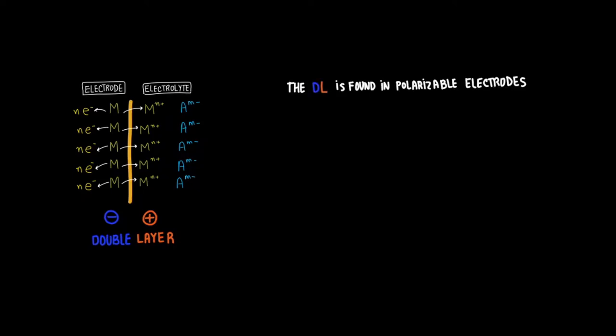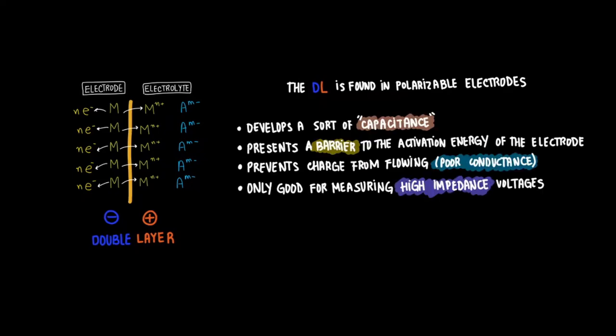This double layer is not at all desirable, but it is found in what is called polarizable electrodes. This double layer develops a capacitance experienced at the interface. It presents a barrier to the activation energy of the electrode and it prevents charge from flowing, thus leading to poor conductance. A polarizable electrode is only good for measuring high impedance voltages, so as said earlier, not very desirable.